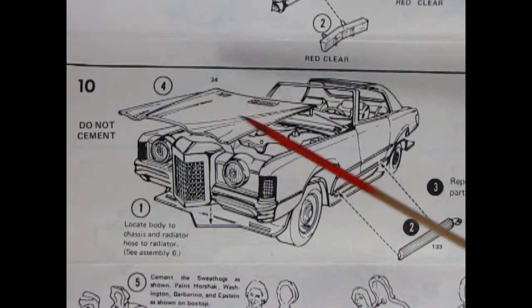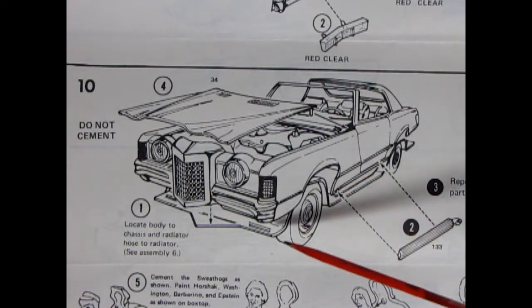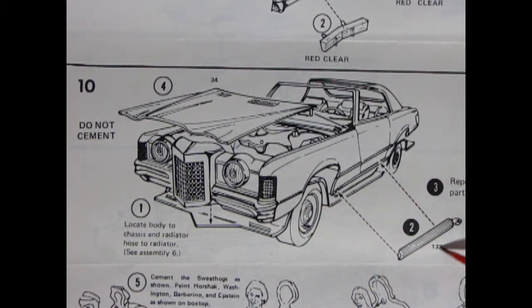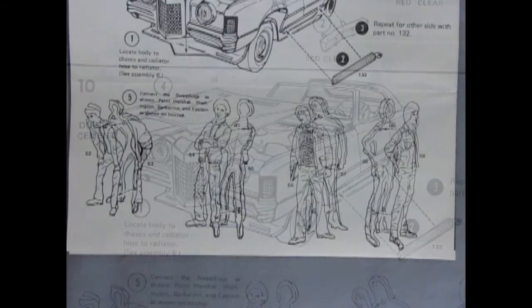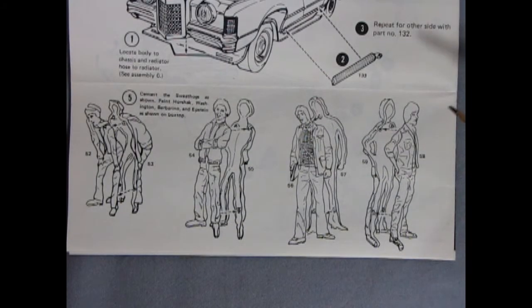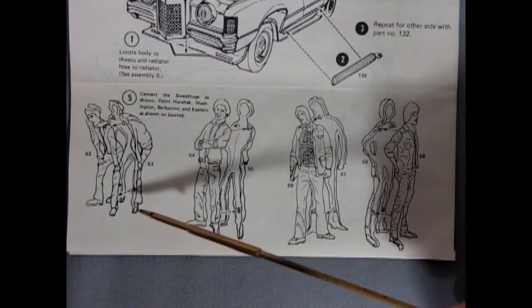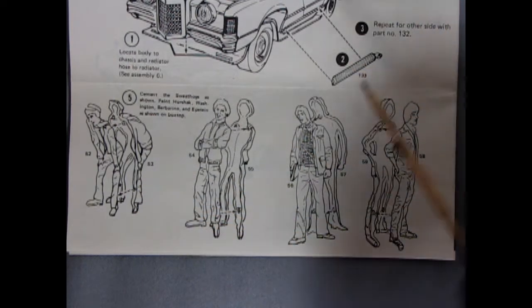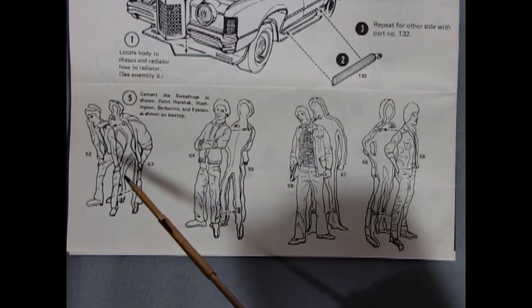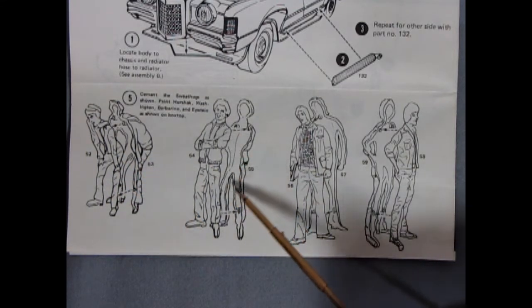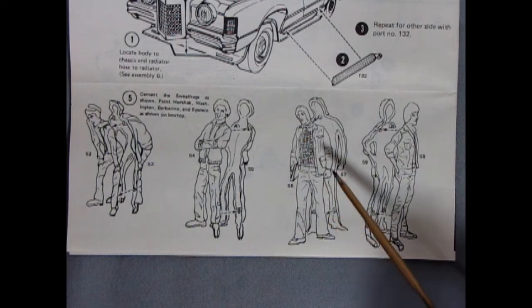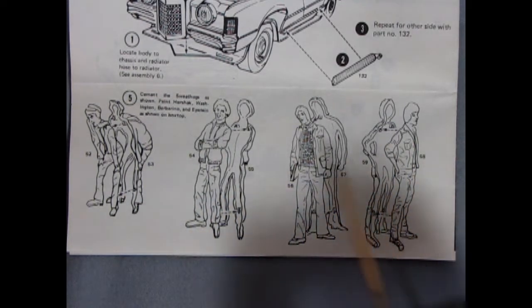Panel 10 shows our hood being placed on and then our body dropping onto the chassis and then here we have these nice side pipes which we'll glue down here on the lower rocker panels. This panel of our instruction sheet shows our four figures and what they look like and also their relationship to the car. So here we have Horshack bending over to look in the trunk. Washington standing up talking with Barbarino and Epstein and it says to paint all these figures as shown on the box top.